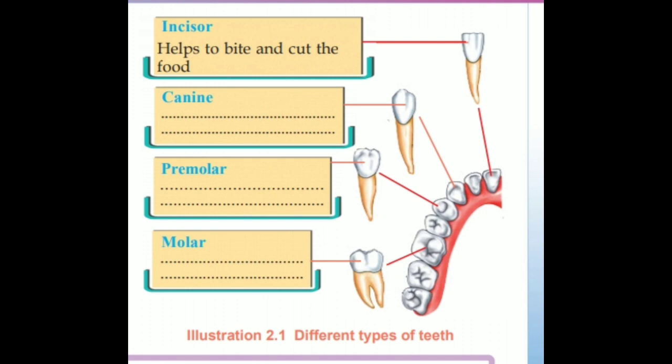It helps in chewing the food. This is the incisors. The number of incisors is 4, 4, 4 — totaling 8.